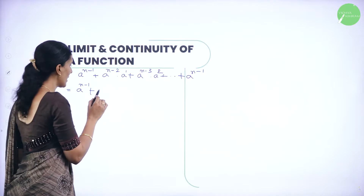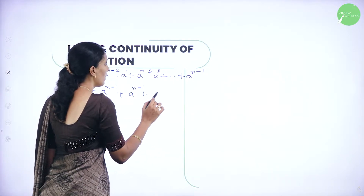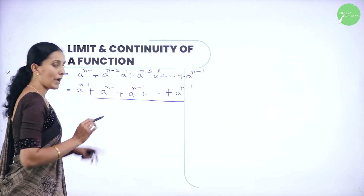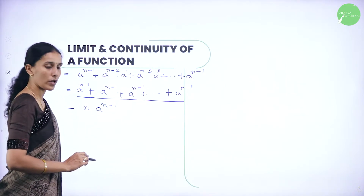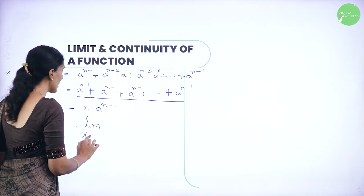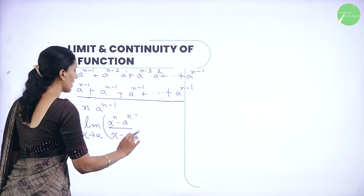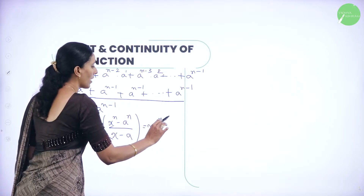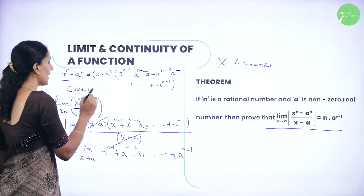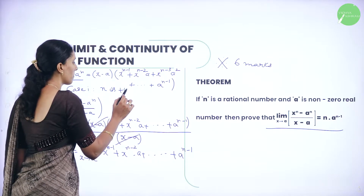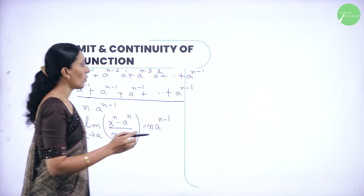Since the base is the same, the powers can be added. So n minus 2 plus 1 gives a power n minus 1. Similarly n minus 3 plus 2 also gives a power n minus 1. We already had n minus 1, and adding one more term gives a power n minus 1 a total of n times. Therefore we conclude: limit as x tends to a of x power n minus a power n divided by x minus a equals n into a power n minus 1. This holds whenever n is a positive integer — this is Case 1.